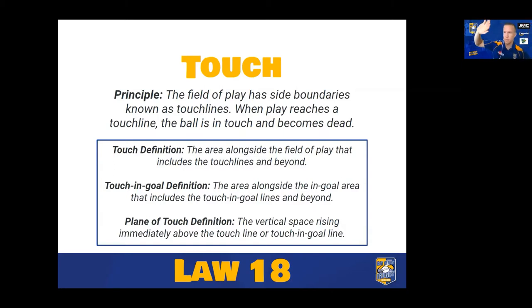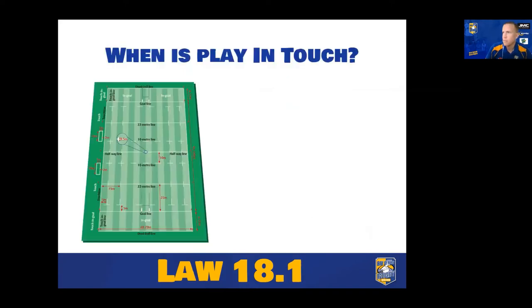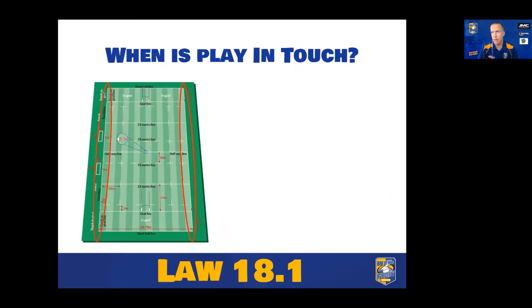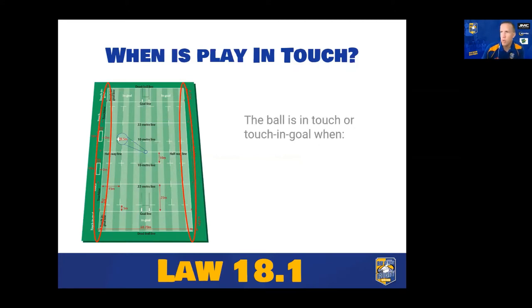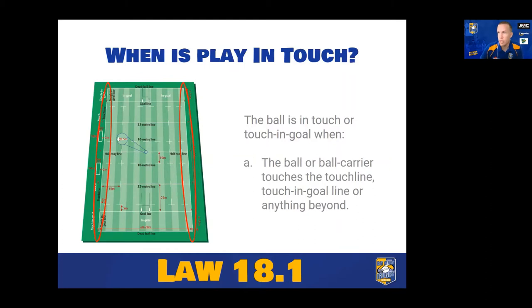Think of that vertical space rising above the line — that's what we mean by the plane of touch. You can see on the diagram where those touch lines and touching goal lines are indicated on the field. The ball is in touch or touching goal when a ball carrier touches the touch line or anything beyond it.